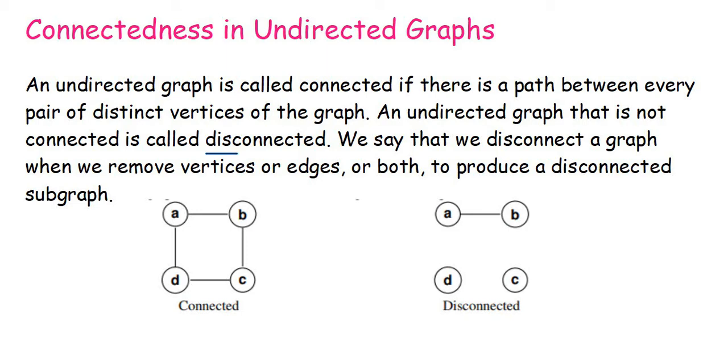An undirected graph is called connected if there's a path between every pair of distinct vertices. An undirected graph that is not connected is called disconnected. We disconnect a graph when we remove vertices or edges, or both, to produce a disconnected subgraph.